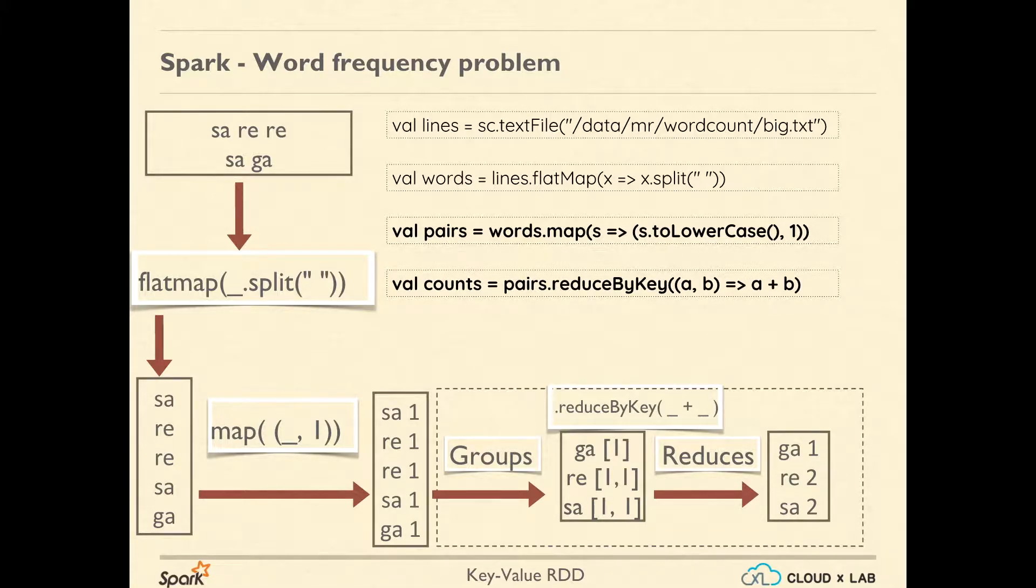The reduceByKey first groups the data based on the key, the first value of our tuple which is a word, and then reduces the values of each key using the function we passed in argument.